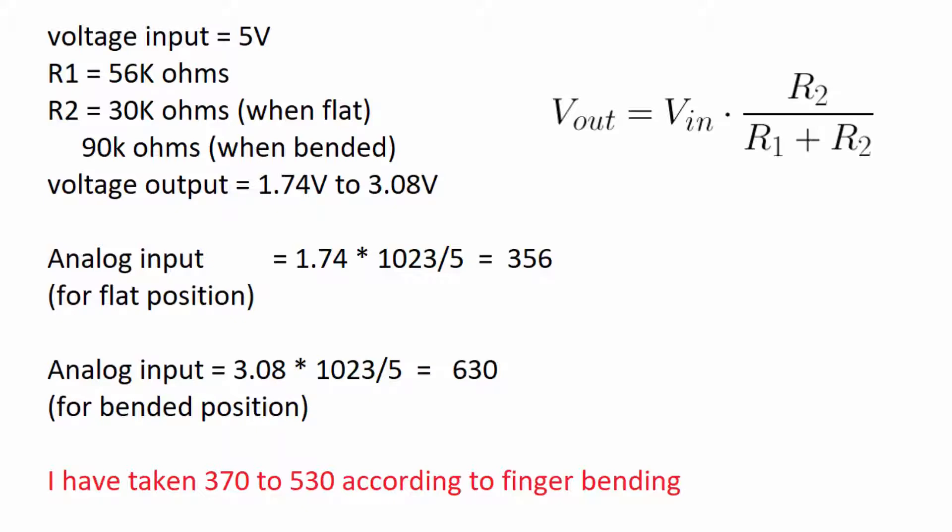It is showing 630 value for bending, but we took 530 because when I bend my finger with sensor, it won't bend that much. So I have taken values according to my finger's bending.